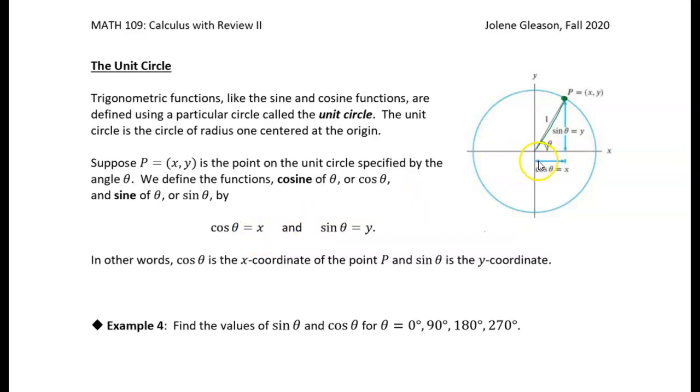All right, so in other words, cosine is the x-coordinate, right, and sine is the y-coordinate of that point.